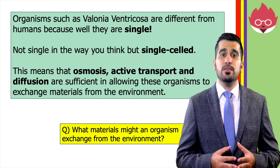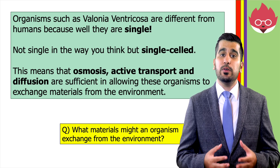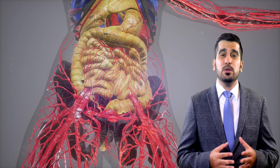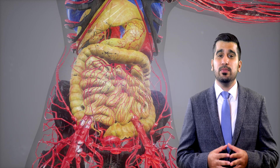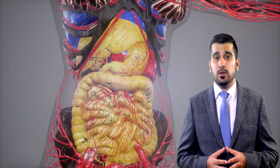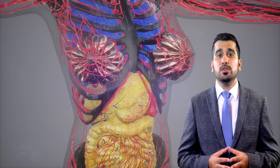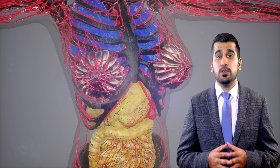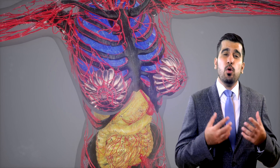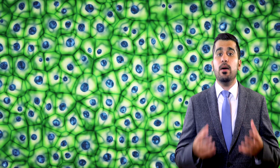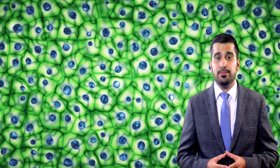A question you might be asking yourself is what materials might an organism exchange from the environment? This could include glucose, oxygen and water. Humans and other multicellular organisms are different — simple diffusion, active transport and osmosis are not enough to transport materials. We need more complex systems to transport materials to all of our millions of cells in our body.